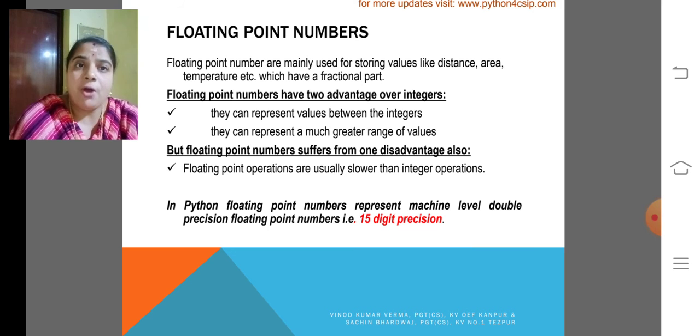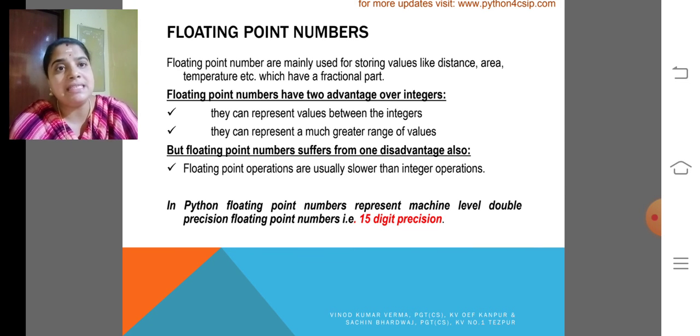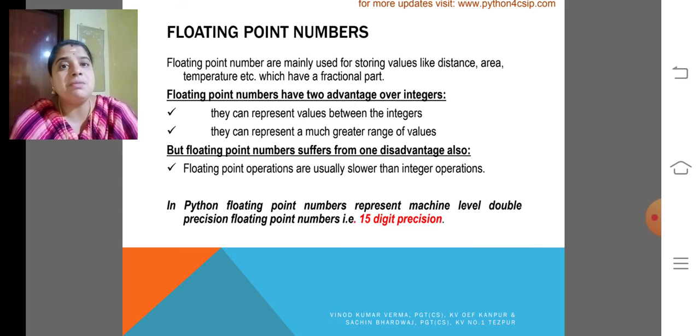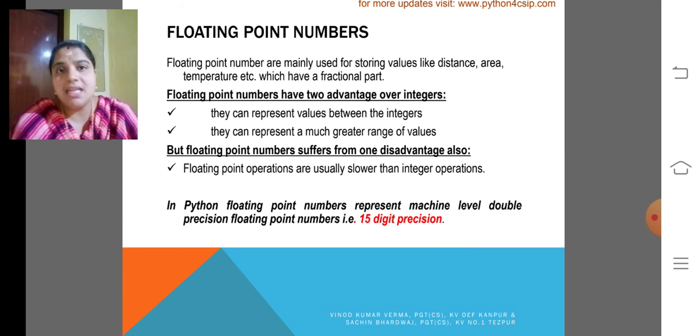Floating point numbers are mainly used for storing values like distance, area, temperature, etc. Sometimes we need to give the amount of money in floating point values. Floating point numbers have two advantages over integers.